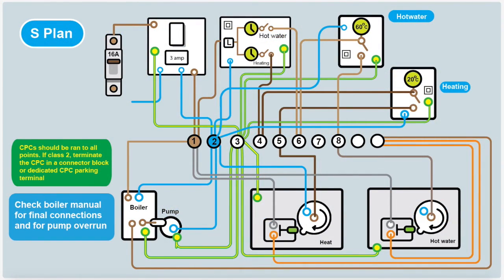So here we have the S plan with all the various connections in there. We've got the CPCs, the line, the neutrals and the switch lives. And yes, it does start looking a bit busy doesn't it?